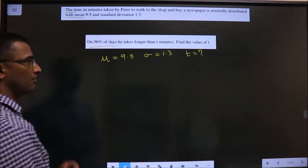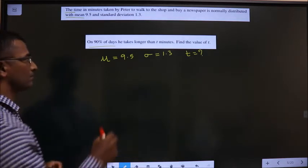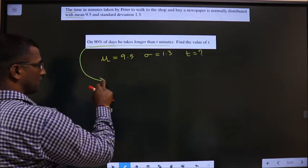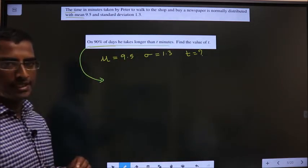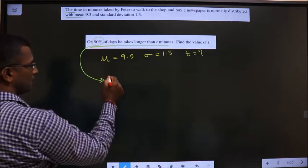Now, we need to find the value of T. For that, the given equation is - change this statement into an equation. And how do we change it? See, 90% is the probability.